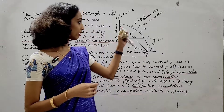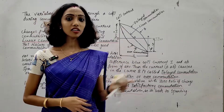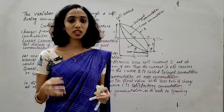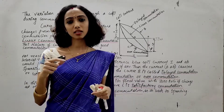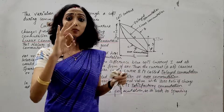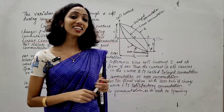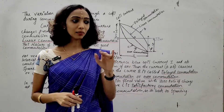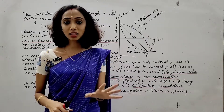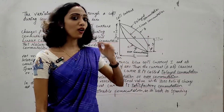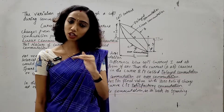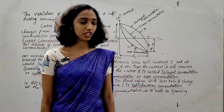This is the variation of commutation current through the coil. We can plot this as a graph showing under-commutation, normal or linear commutation, and over-commutation.